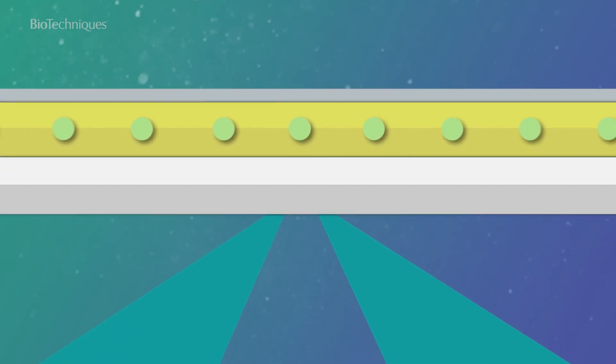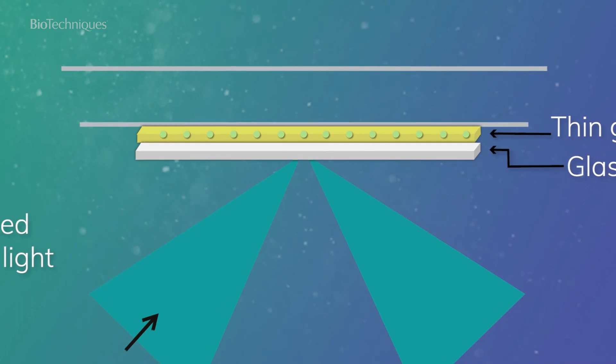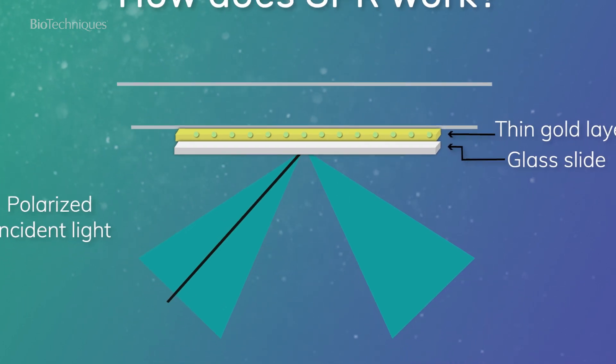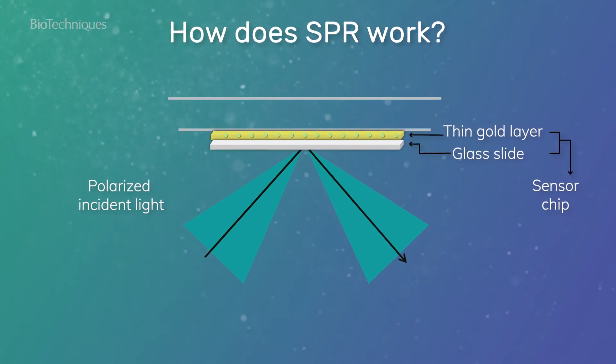When total internal reflection occurs at a specific angle, some of the energy from the incident light is lost. This occurs when the light interacts with delocalized electrons in the thin metal film, which causes a reduction in the reflected light intensity, creating surface plasmons.